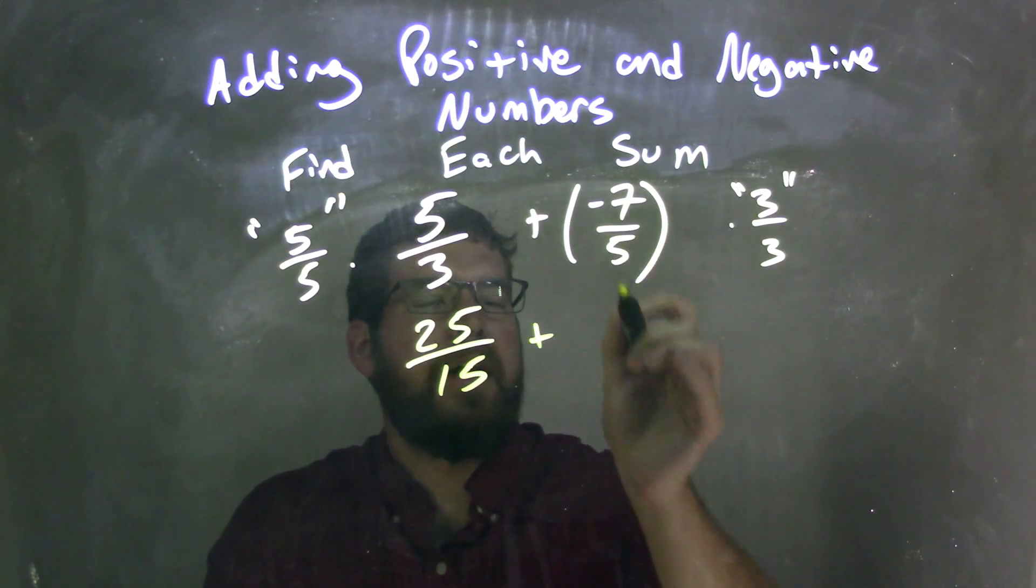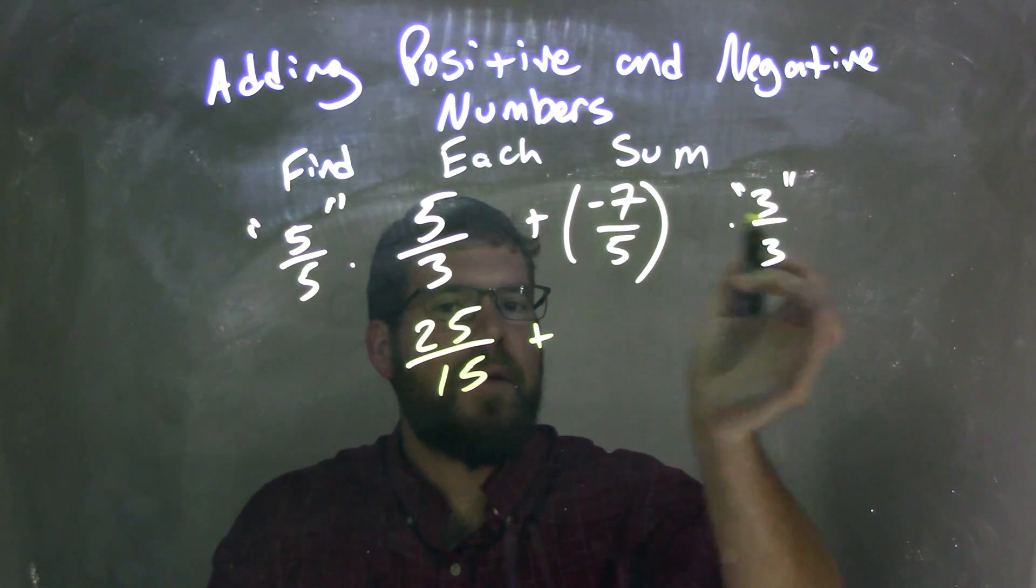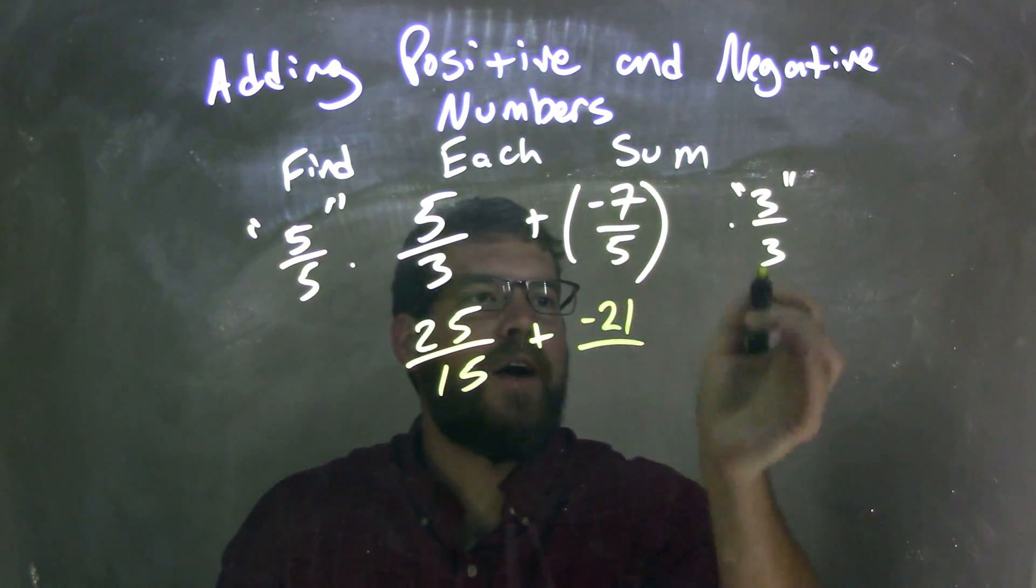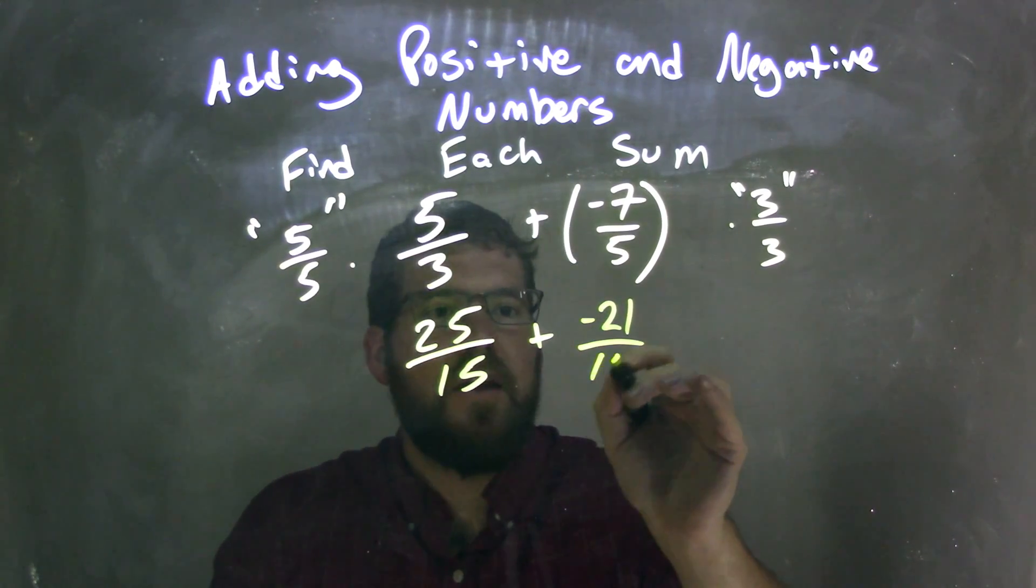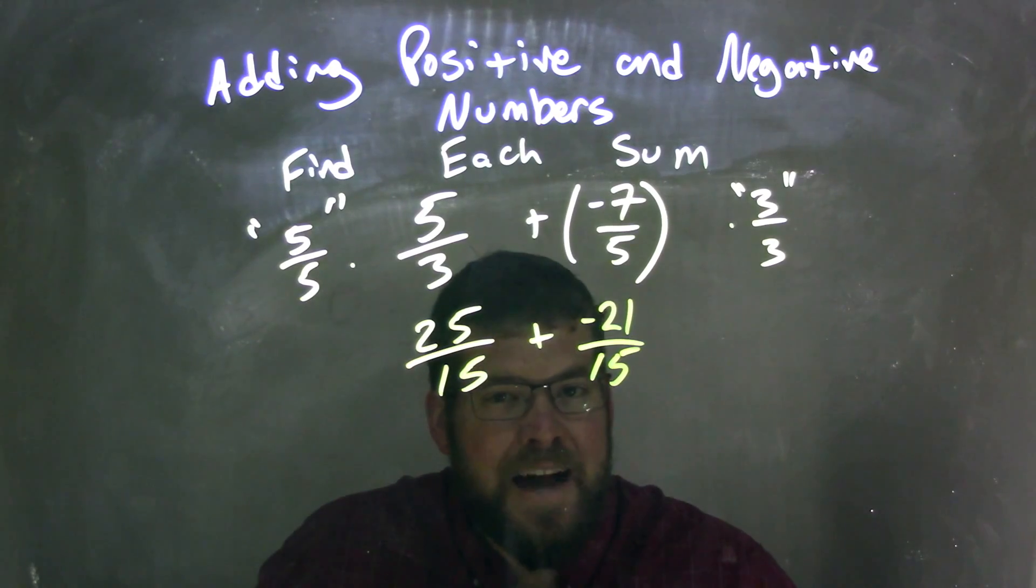Then we're adding negative 7 fifths multiplied by 3. Across, negative 7 times 3 is negative 21, and 5 times 3 is 15. That works because we have the same base, a common denominator.